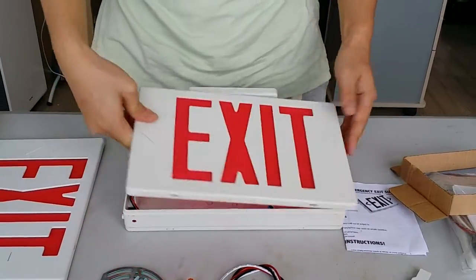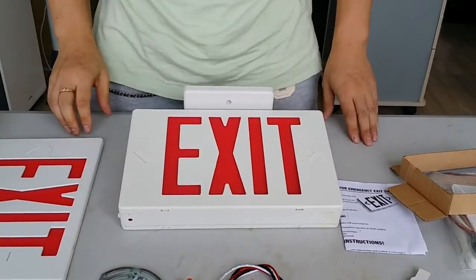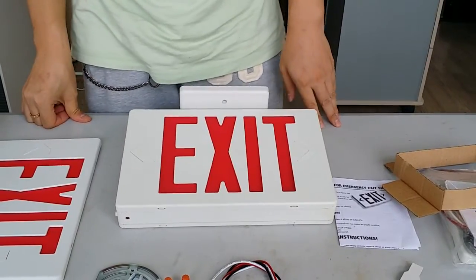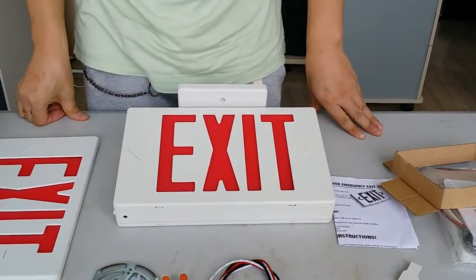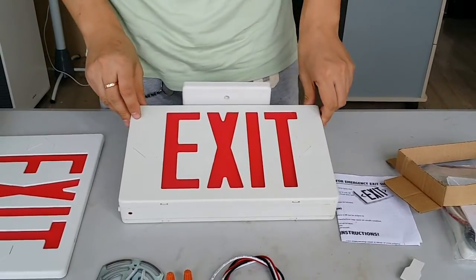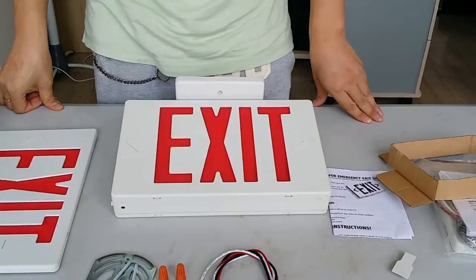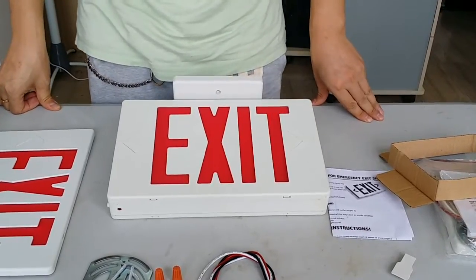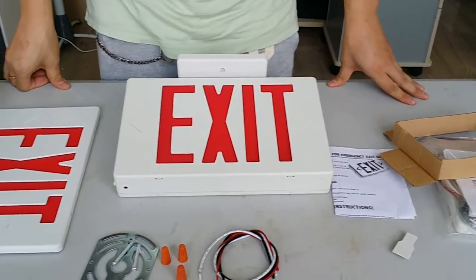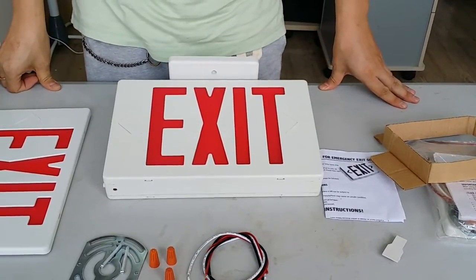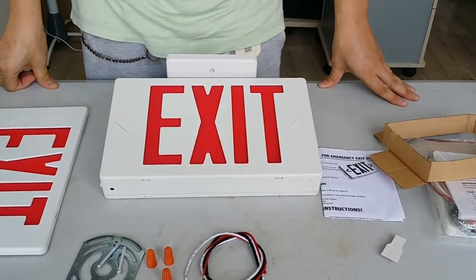This light is made from UL 94V-0 flame-rated, fire-retardant material ABS. The letters are 6 inches. They can be green or red colors. It's suitable for damp locations, working under 0 degrees Celsius to 40 degrees Celsius.